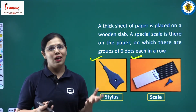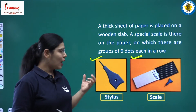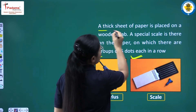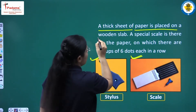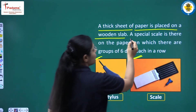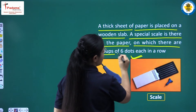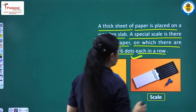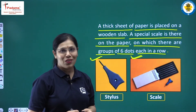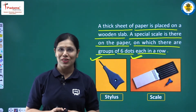You must not have seen these before, as they are not very common — they are used by people who cannot see. A thick sheet of paper is placed on a wooden slab. A special scale is placed on the paper on which there are groups of six dots each in a row. We have already discussed that this script includes six particular dots and all things written are written with the help of these six dots only.